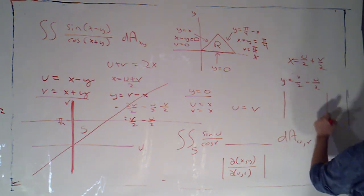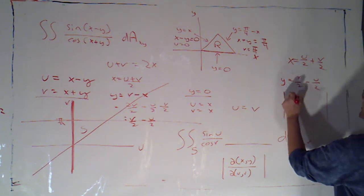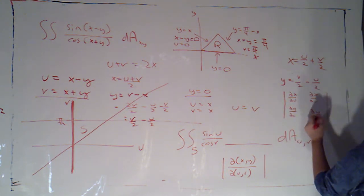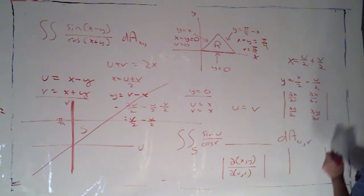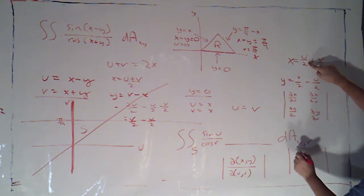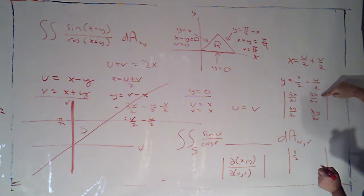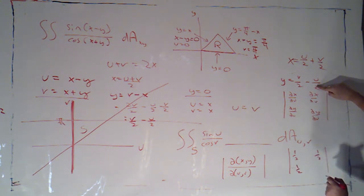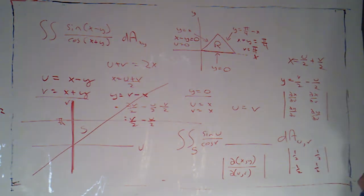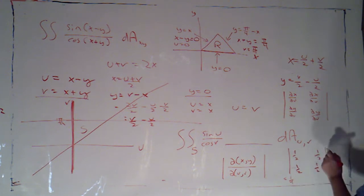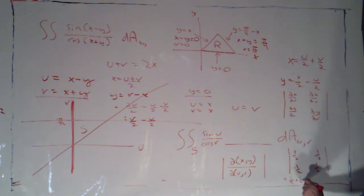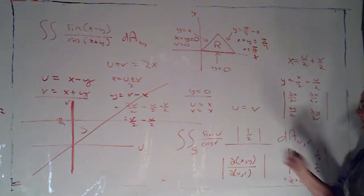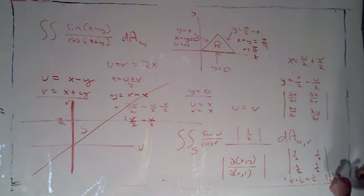So if I look at the determinant — partial x partial u, partial y partial u; partial x partial v, partial y partial v — partial x with respect to u is 1/2, partial x with respect to v is 1/2, partial y with respect to u is negative 1/2, partial y with respect to v is positive 1/2. So the determinant is 1/4 minus negative 1/4, which is plus 1/4, giving 2/4 or 1/2. My scaling factor is the absolute value of 1/2, which is 1/2.